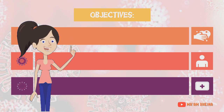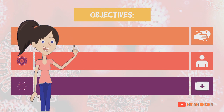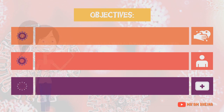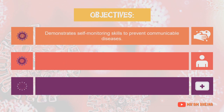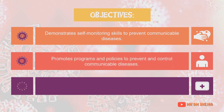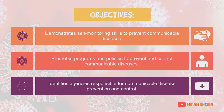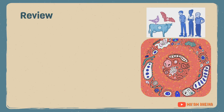At the end of our lesson, you are expected to do the following: demonstrates self-monitoring skills to prevent communicable diseases; promotes programs and policies to prevent and control communicable diseases; and identifies agencies responsible for communicable disease prevention and control.